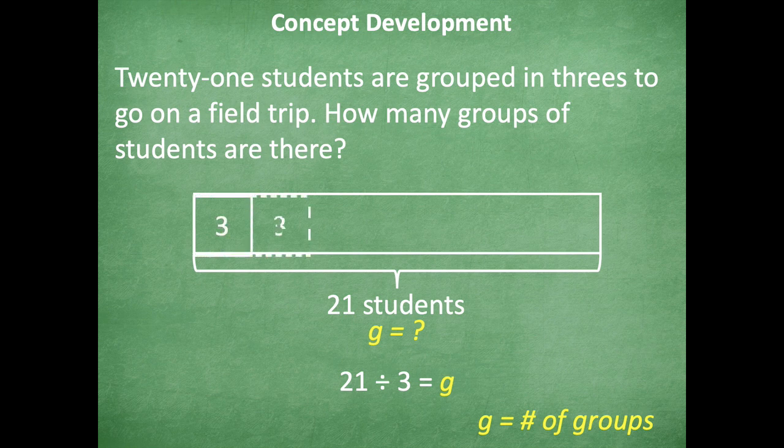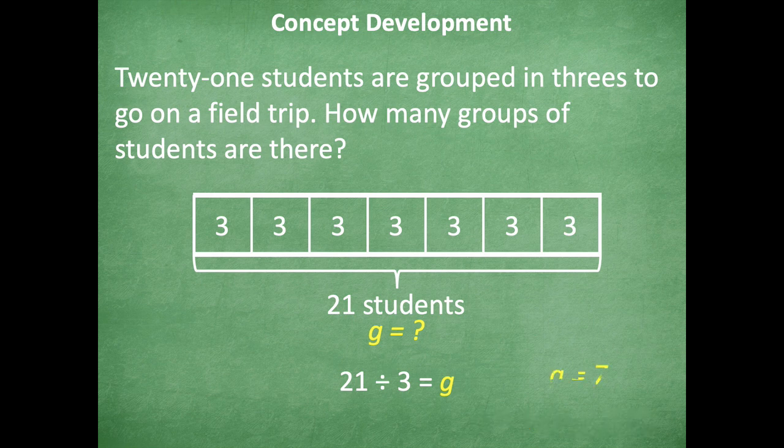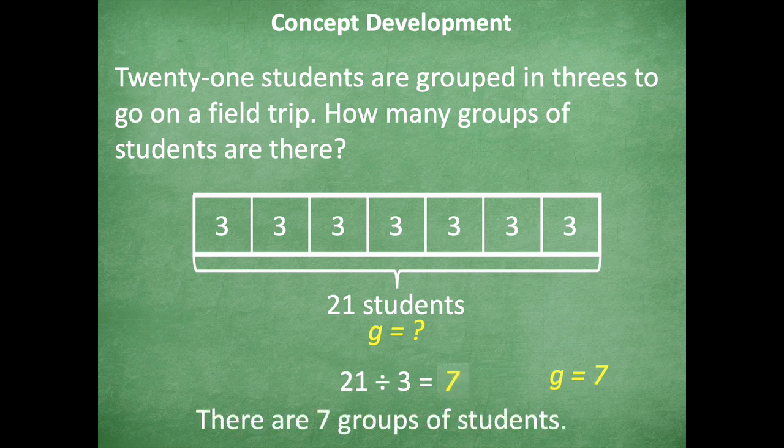Okay, so 3, 6, 9, 12, 15, 18, 21. So as I go through, I can count my number of groups, and g equals 7 because there's seven groups. So 21 divided by 3, I can replace that g now with a 7. So there are seven groups of students.